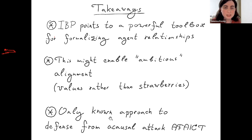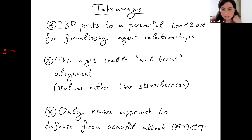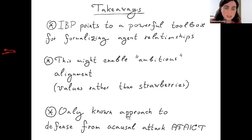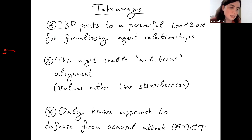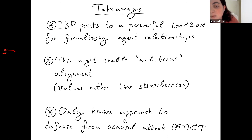Finally, this approach is, as far as I can tell, the only known approach to defense from acausal attacks. I think everything else that was proposed on this front was much less convincing. By extension, it's hopefully the only robust approach to preventing meso-optimizers, and in particular non-Cartesian meso-optimizers, which are especially insidious and really hard to do anything about by any other means. I'll stop here and go to questions.